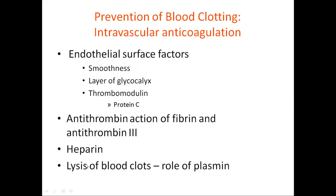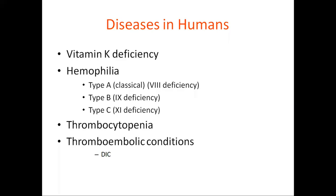How does lysis of the blood clot occur? There is a role of plasmin. Whenever there is tissue injury, there is release of clotting factors and a clot is formed. A large amount of plasminogen is entrapped in the clot. This will not become plasmin until tissue plasminogen activator is released by the damaged endothelial vessel wall. The injured tissues and vascular endothelium slowly release tissue plasminogen activator a few days later after the clot has stopped the bleeding. This tissue plasminogen activator converts plasminogen into plasmin, which is a proteolytic enzyme that removes the remaining unnecessary blood clots.